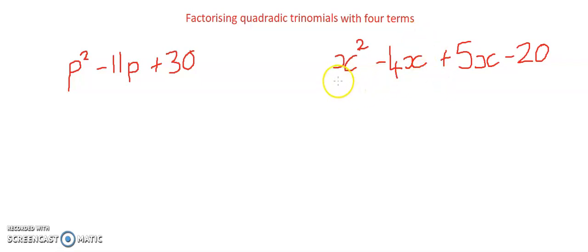I can look at these in terms of grouping them because they both have something that is common and that's what we need to find a common factor. Likewise with 5x minus 20 there's a common factor of 5.